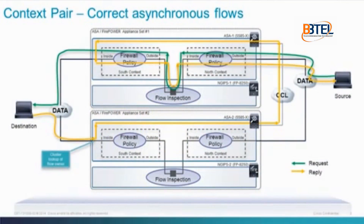One of the top solutions that came out of that was using a context pair. First, we had to connect the devices using dedicated interfaces, such that each ASA in the cluster needs to directly connect to a Firepower appliance one-to-one, forming a set. Then the two contexts — one north and one south — sandwich the IPS services into the ASA cluster. Using this pair of contexts allows the ASA cluster to correct any asynchronous flows, both inbound and outbound, forwarding packets over the cluster control link back to the flow-owning ASA Firepower set.